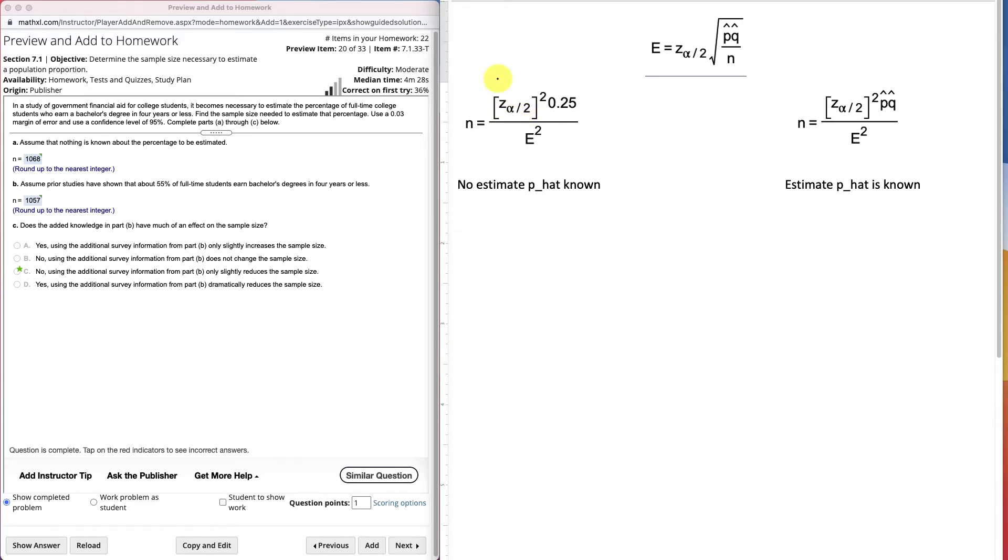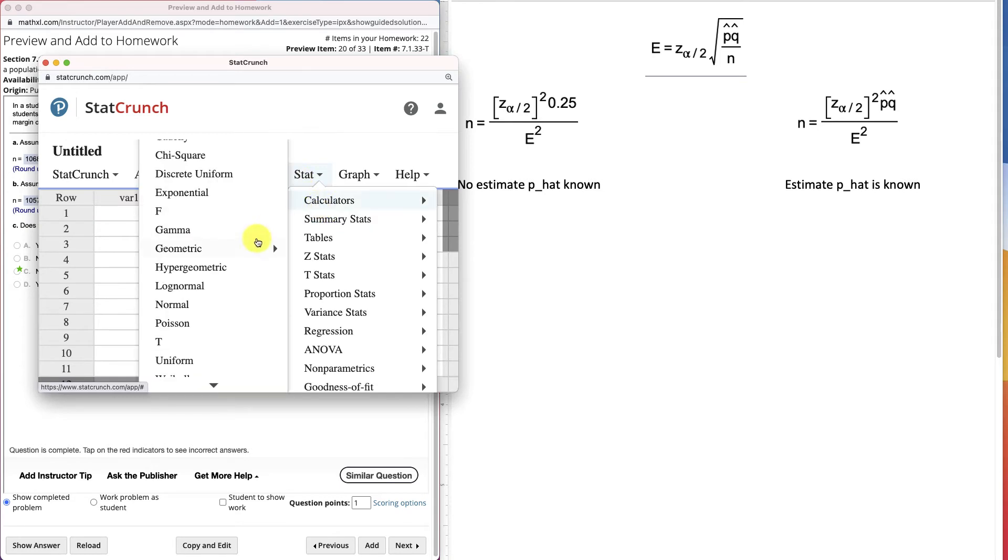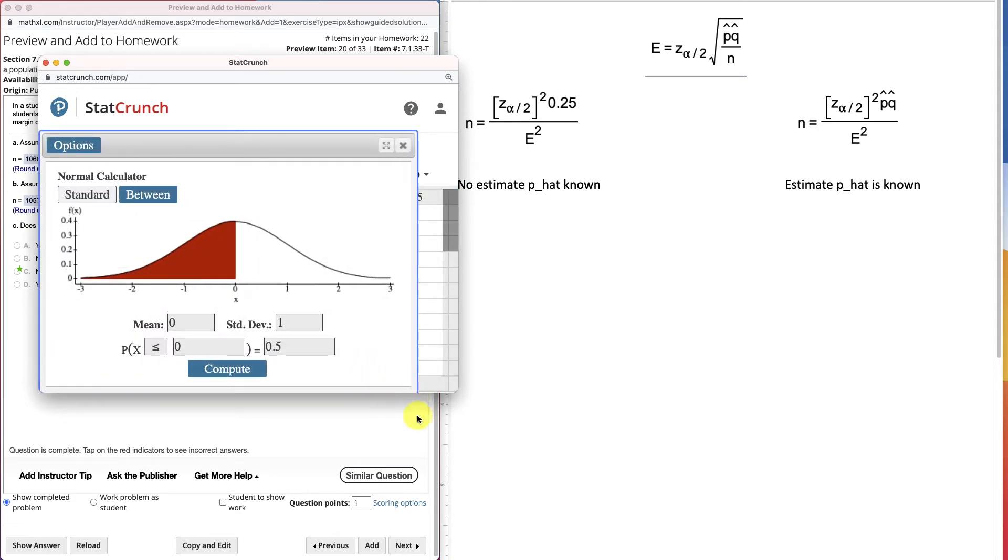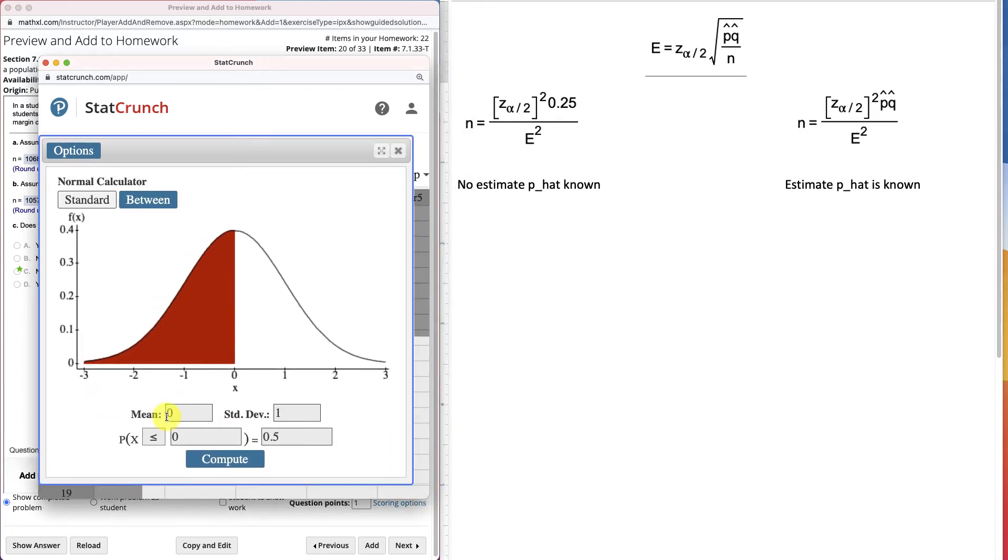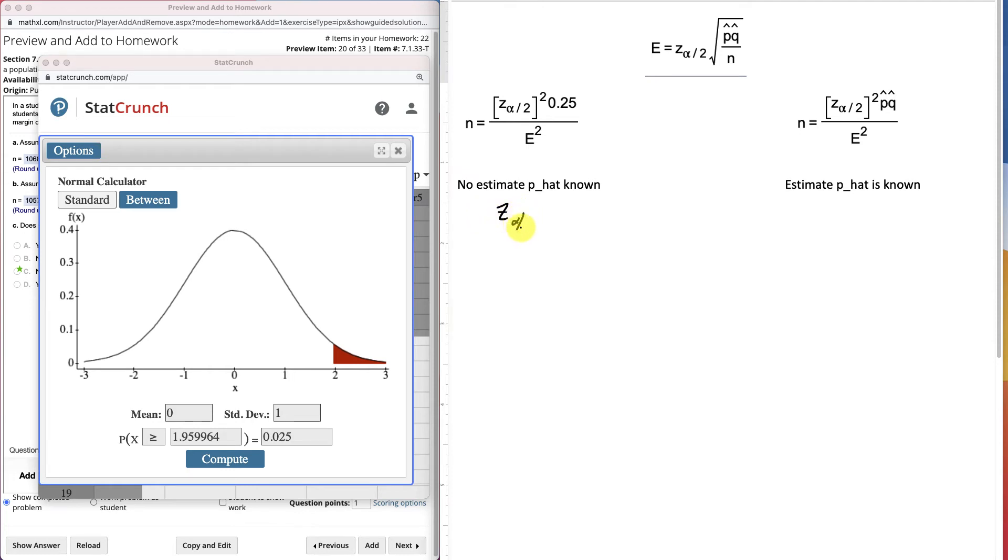Now I could do that in a table, but I can do it also a little quicker if we just go down here and open up StatCrunch. There's a calculator in StatCrunch. Stat, calculator, normal. Z is normal. We use the mean of 0 and standard deviation of 1, and that means these are z values. Now we want the position to the right, the area to the right, and we want that area to be 2.5%, 0.025. We compute that.